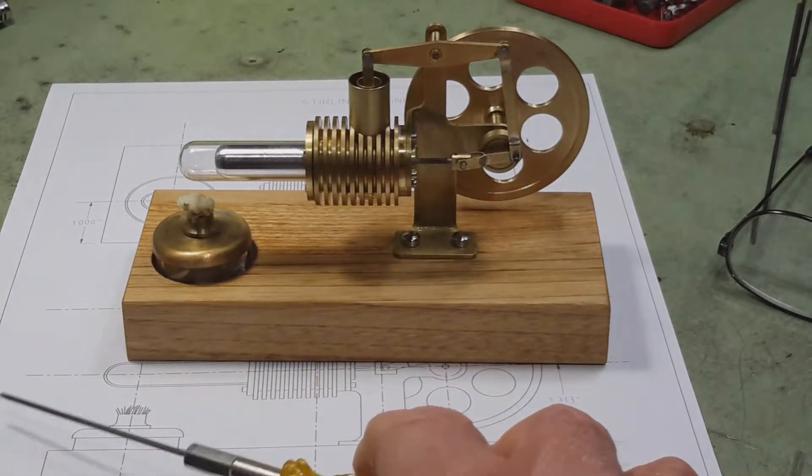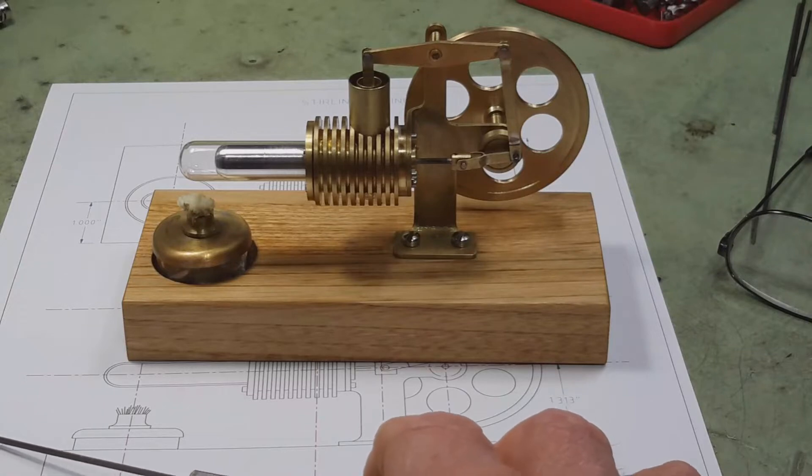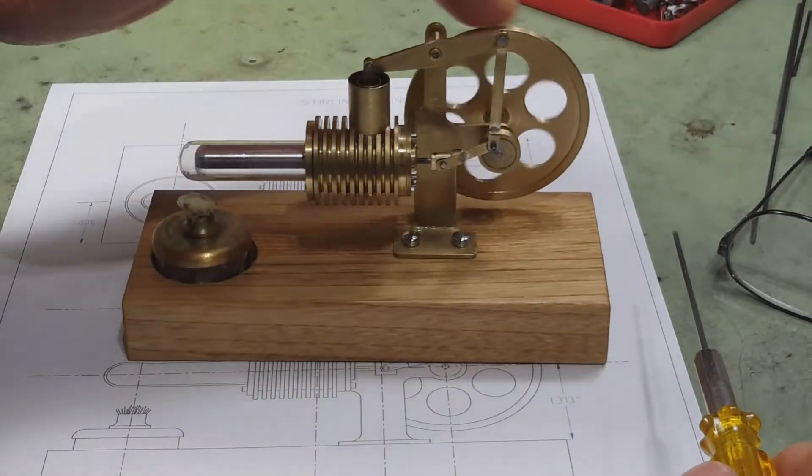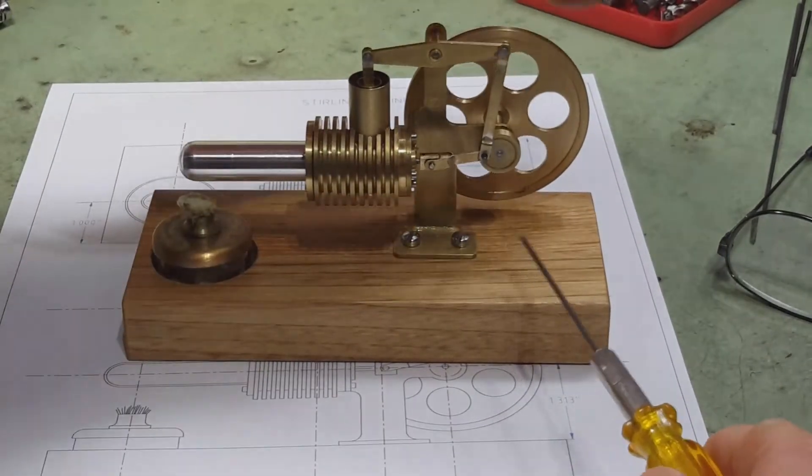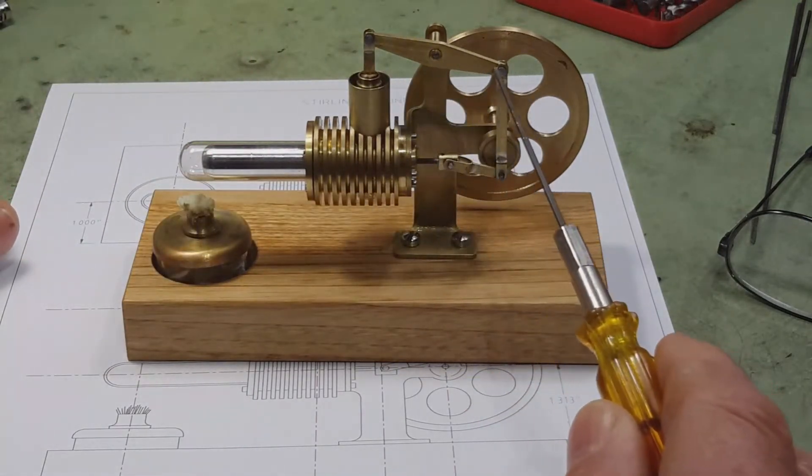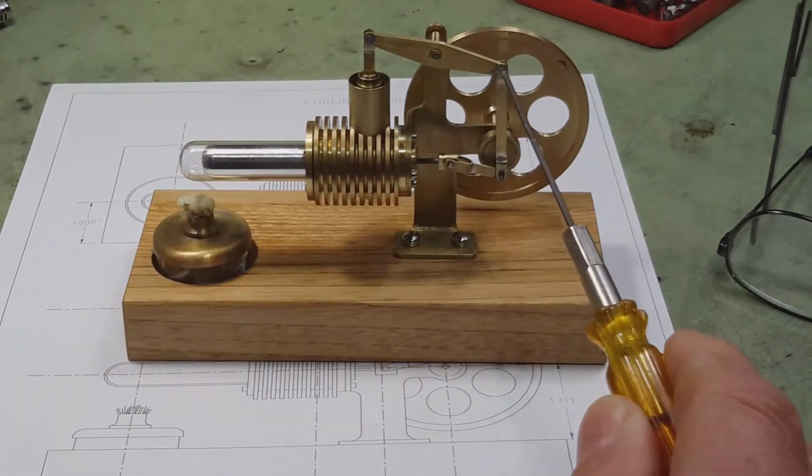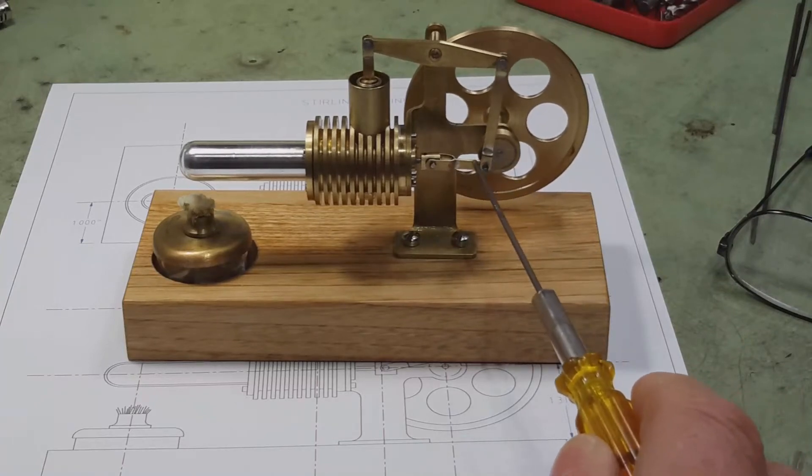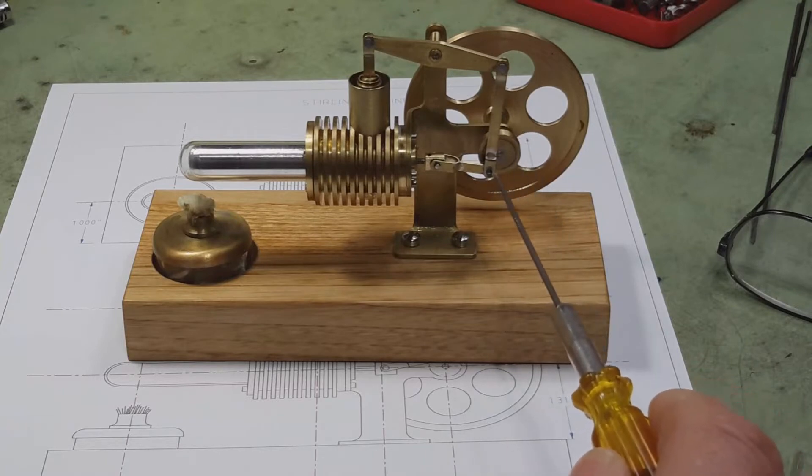The engine runs on denatured alcohol. I believe this configuration is referred to as a bell crank where the power piston operates through a rocker arm and the same crankshaft can handle both the power piston and the displacer.